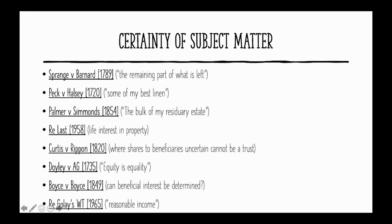Moving on to Boys v Boys in 1849, a more complicated case. Four houses were left on trust for Maria and Charlotte under the rule that Maria was to choose her favourite house and Charlotte would get the other three. However, Maria died before she could make her choice. The court held that the trust in favour of Charlotte was void because the subject matter — the three houses she was entitled to — could not be determined, as it was unknown which house Maria would have picked. The policy reason behind this relates to property law's principle that all houses are unique. The general rule is that where the beneficial interest is not ascertainable, there cannot be an express trust.